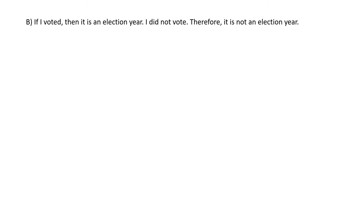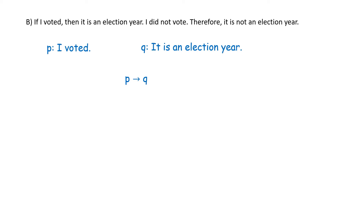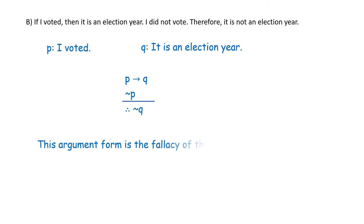Part B: if I voted, then it is an election year. I did not vote, therefore it is not an election year. Let P be 'I voted' and Q be 'it is an election year.' Symbolically: P → Q, ¬P, therefore ¬Q. This argument form is called the fallacy of the inverse, and therefore it is invalid.